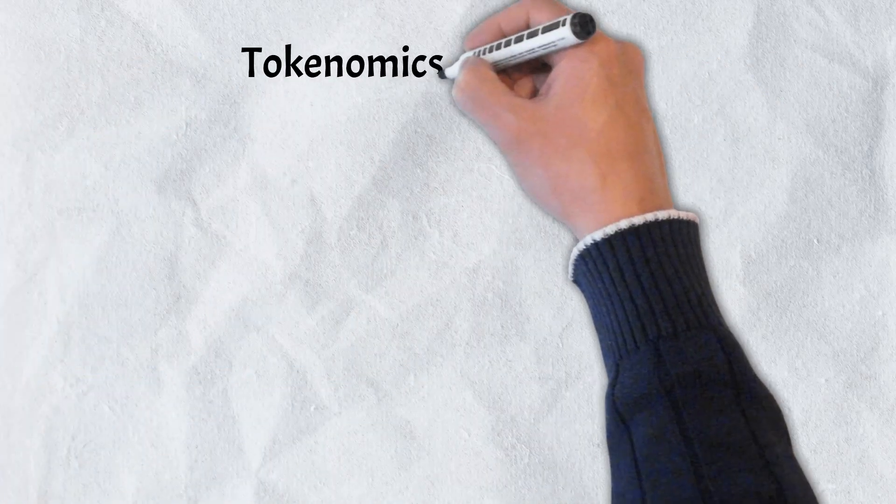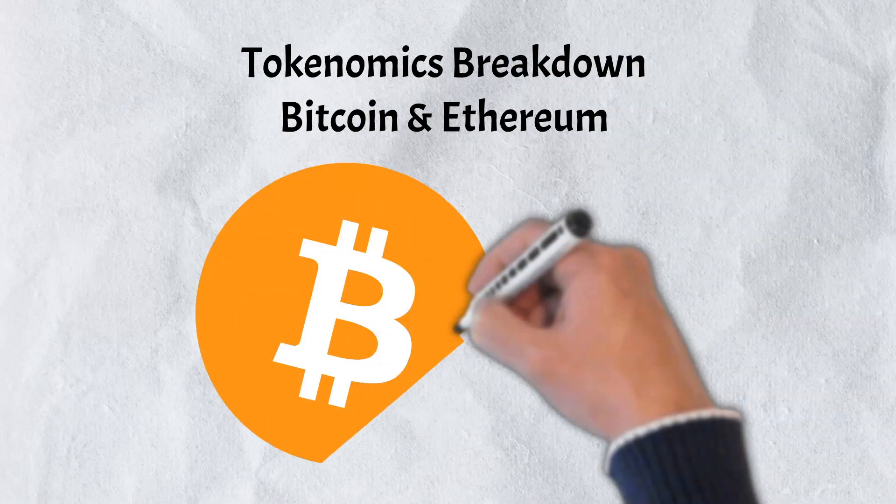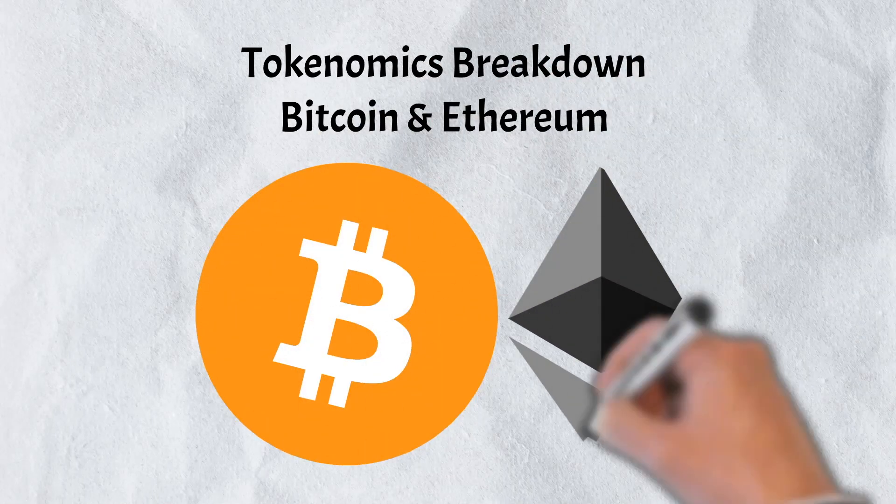Knowing what you now know regarding tokenomics, let's take a look at the tokenomics of the two largest cryptocurrencies, Bitcoin and Ethereum.